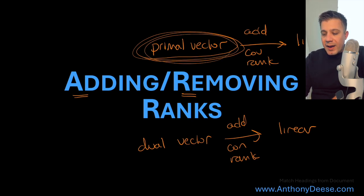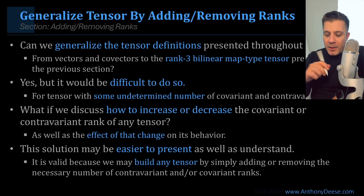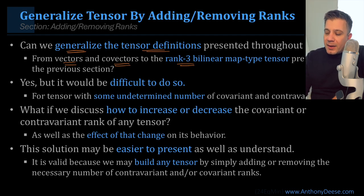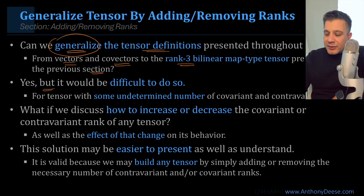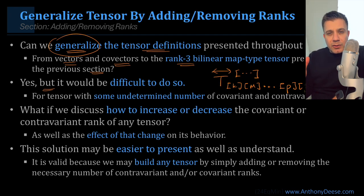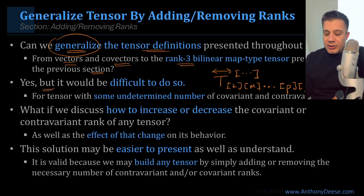We're going to discuss how to build tensors up as well as decompose them into lower rank tensors. Can we generalize the tensor definitions from vectors and co-vectors to linear maps and the rank-3 bilinear map? The answer is yes, but it would be difficult. I've seen expressions where they define a tensor with some generic number of indices and superscripts — but since this course is for non-mathematicians, I'm trying to stay away from that. I personally don't react well to those types of presentations.